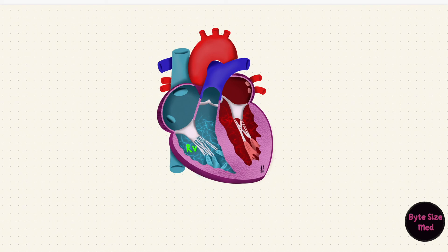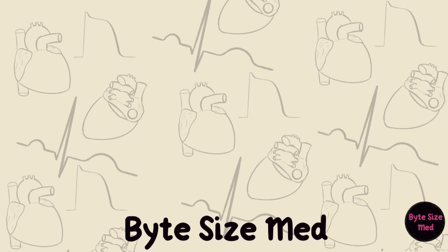And now the ventricles have developed, separated into right and left with their separate outflow tracts — the pulmonary trunk and the ascending aorta. I hope this video was helpful. If it was, you can give it a like and subscribe to my channel. Thanks for watching and I'll see you in the next one.